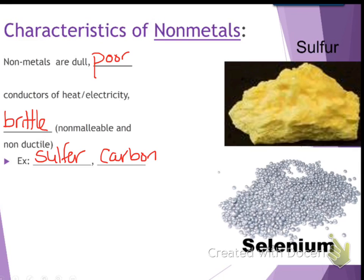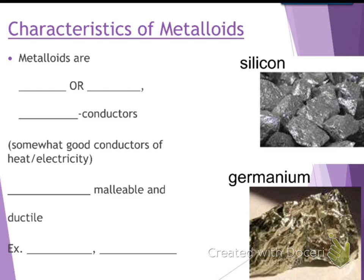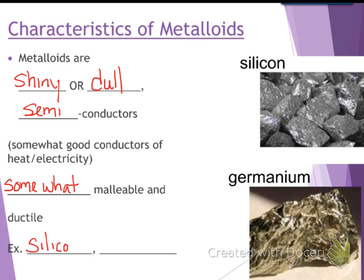And then we have the very few, the purple ones in the middle were metalloids. Metalloids are shiny or dull. They're tricky like that. They're semiconductors, so that means they're somewhat good at conducting heat and electricity, but they're not great. And they're somewhat malleable, meaning they're somewhat bendable. You have to work a little harder to bend those. Examples would be silicon, germanium. Those would be two examples.